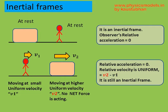Below, you have the observer moving at a small velocity V1 and the box is moving to the right with a larger velocity V2. That can also be considered as an inertial frame of reference because both of these are having constant velocity and not accelerating.